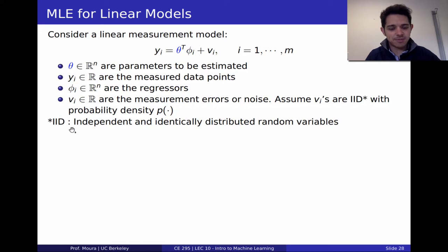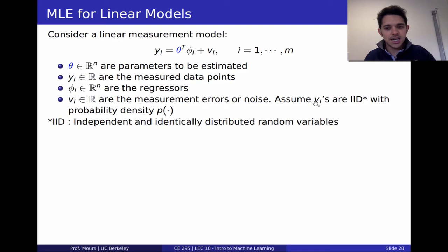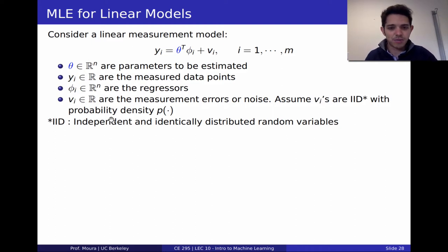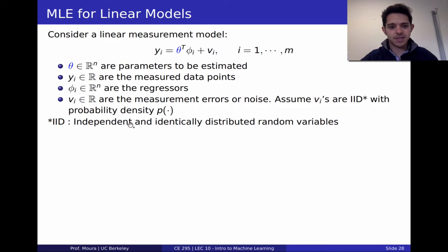An important assumption is that the noise terms v_i are independent and identically distributed, or IID, with probability density p. IID means: independent — the probability of v_1 does not depend on v_2, so each instance is generated by its own independent distribution with no cross-correlation. Identically distributed means the same probability density function holds for all v_i's, but they remain independent from one another.